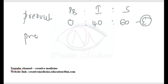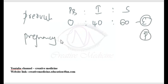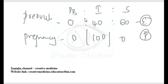In pregnancy, which is a progesterone predominant state, there are only intermediate cells. So parabasal cells are 0, intermediate cells are 100, and superficial cells are 0.